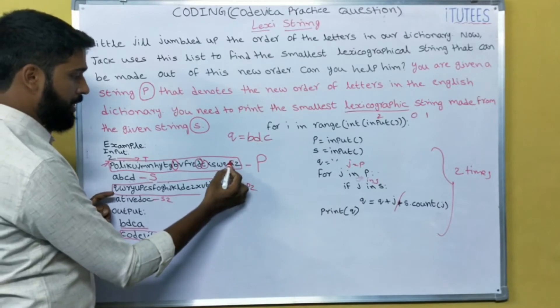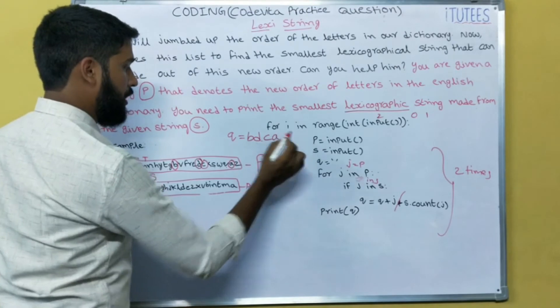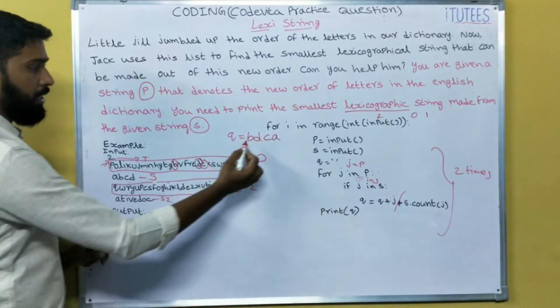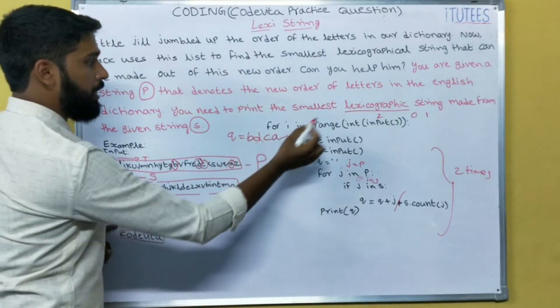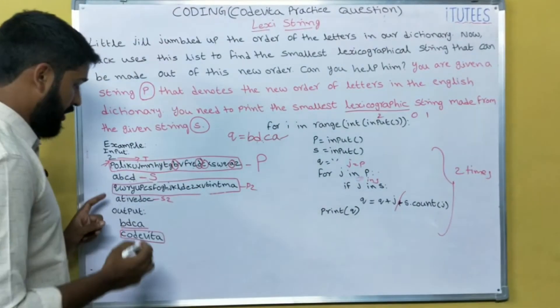A, is it? Yes. So Q plus A, that means A. So this is the B, D, C, A. This is the lexicographic string for this string S based on this order.